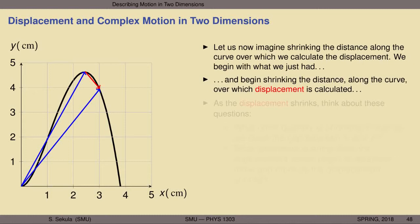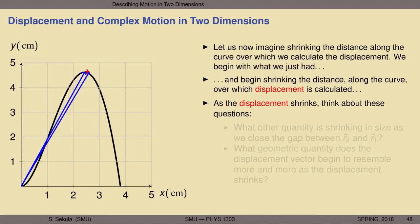We do this one more time, and now we're getting very close. The displacement is getting very small, but nonetheless is still a vector that points in a direction and has a length. Even though it's growing shorter, it still maintains its vector properties. We do this one more time, and now the second vector is growing extremely close to the first one. The little arrow representing the displacement is getting very hard to see on the video, but it is still an arrow with physical extent — it has length, it has direction, it is still a vector.